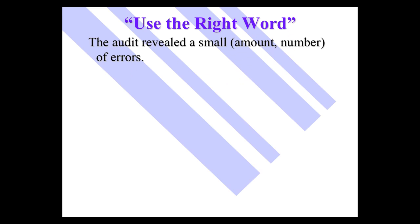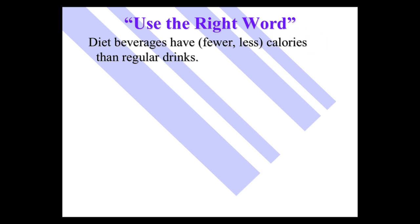The audit revealed a small amount or number of errors. The audit revealed a small number of errors. Let's go ahead and do the next one. Diet beverages have fewer or less calories than regular drinks. Diet beverages have fewer calories than regular drinks. The issue in both of these has to do with countability. If you can count, use number. If you can't count, use amount. If you can count, use fewer. If you can't count, use less. So there was a large amount of confusion. The room is less than half full. But there are fewer than 50 people in the room. I can count people.